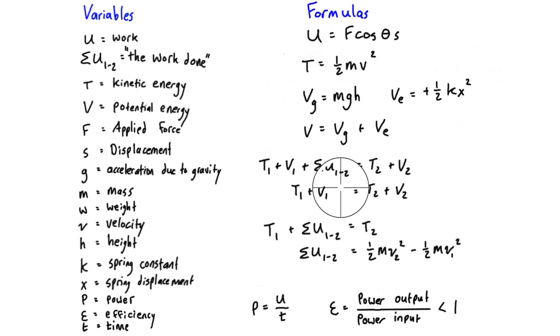This work term here is usually referring to friction or a non-conservative force. If there is no non-conservative forces present, if it's only conservative forces, that just drops out - it goes away. We can just simply have T1 plus V1 equals T2 plus V2.